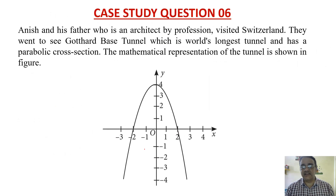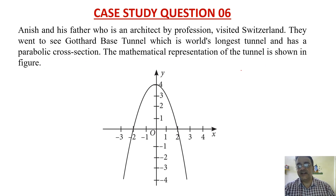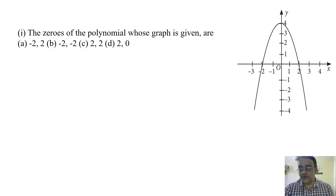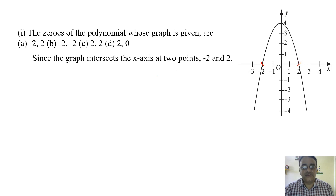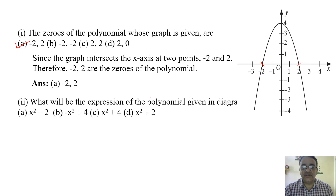Now case study question six: Anish and his father, an architect, visited Switzerland to see the Gothard Base Tunnel, the world's longest tunnel, which has a parabolic cross section. Based on the mathematical representation shown in the figure, the zeros of the polynomial whose graph is given are minus 2 and 2, since the graph intersects at those two points. Correct option is A.